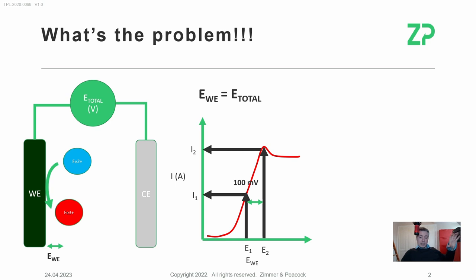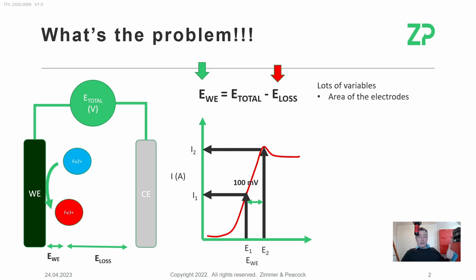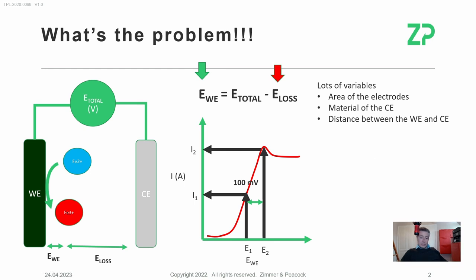There are many parameters that cause a variation in that potential loss. The area of the electrodes — if we use a big counter electrode, the potential lost at the counter electrode is less; if we use a small counter electrode, we can get big losses. The material of the counter electrode — whether you're using platinum, gold, or carbon — can give very different losses. The distance between the working and counter electrode is one of the more sensitive parameters.